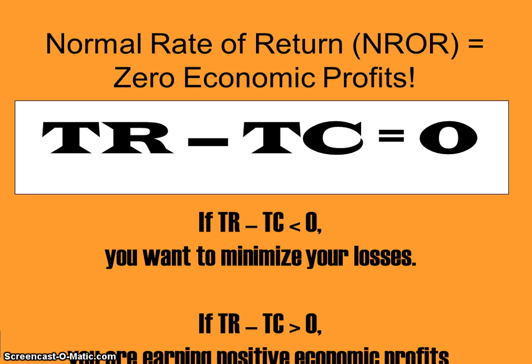A normal rate of return is zero economic profits, because all implicit and explicit costs are accounted for from an economist's perspective. If you walk away at the end of the day with nothing extra after paying all your costs, that is just fine — because you've already accounted for implicit costs like the opportunity cost of your time, depreciation of machinery, or owner-occupied resources. So if total revenue minus total costs is zero, that's considered a normal rate of return and perfectly acceptable.